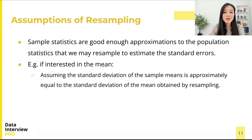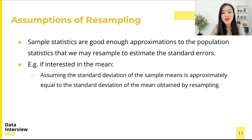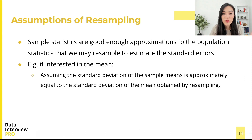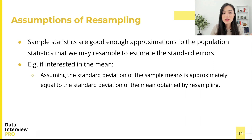We can then compute the variance of this distribution or its quantiles to estimate variability and compute confidence intervals and p-values. One key underlying assumption of resampling is that sample statistics are good enough approximations of the population statistics. For example, if we are interested in the mean, we assume the standard deviation of the sample means is approximately equal to the standard deviation of the mean obtained by resampling.